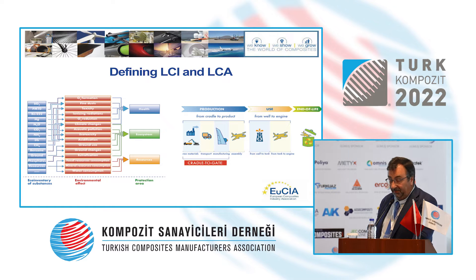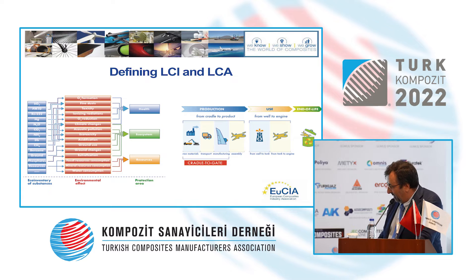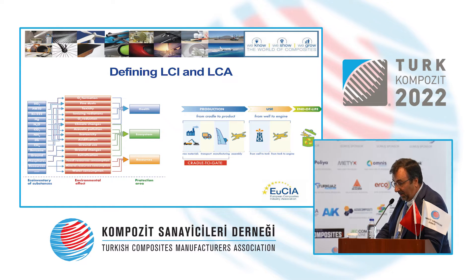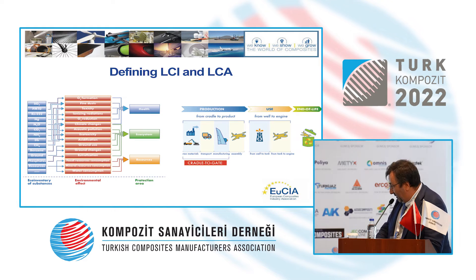A typical LCA scheme starts from the inventory of substances and different chemicals involved in producing the raw materials or part. These are associated with environmental effects, and the analysis outputs protection areas: human health, ecosystem protection, and resource depletion. The eco-calculator covers only the cradle-to-gate portion — the orange label — which includes raw material production, transportation, and manufacturing of the part, without considering assembly, use, or end-of-life phases.